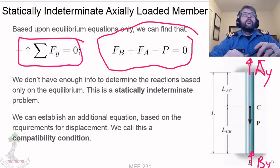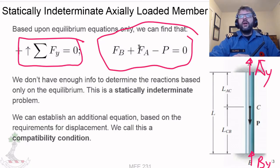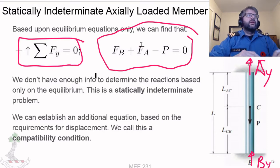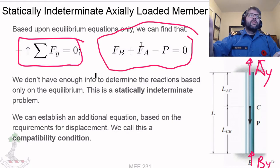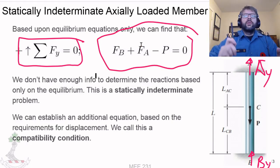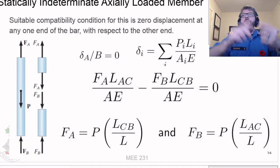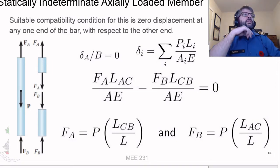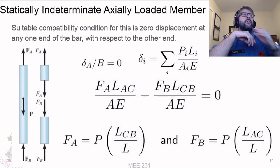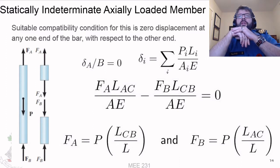So we're going to have to base this upon displacement. We need to figure out a condition — what sort of condition this loading situation imposes upon us. We call that a compatibility condition. For this one, a suitable compatibility condition is that we have zero displacement at any one end of the bar with respect to the other.